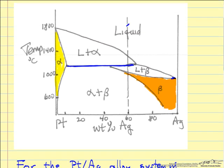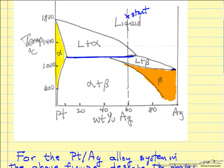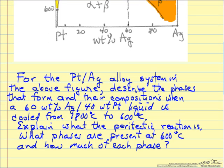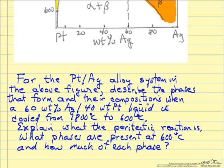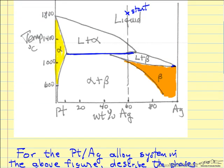We are going to start at 60-40 in the liquid phase and cool it down. The problem also wants us to explain what the peritectic reaction is, what phases are present at the end, and how much of each there is. At the end we are at 600 degrees. As we start at 1800°C and cool this liquid down, it remains a liquid until we get to this point.